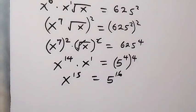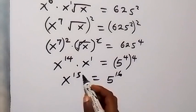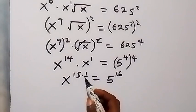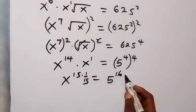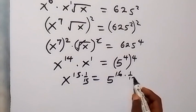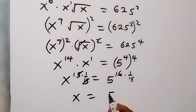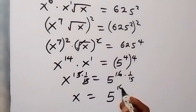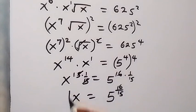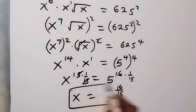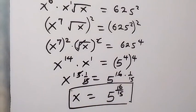Now let's remove this power 15 by multiplying both sides by 1 over 15. This cancels out, and we are left with x equals 5 raised to power 16 over 15. That is the value of x from the first method. Now let's use the second method.